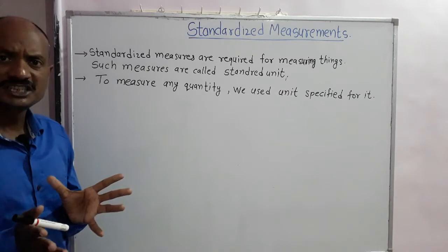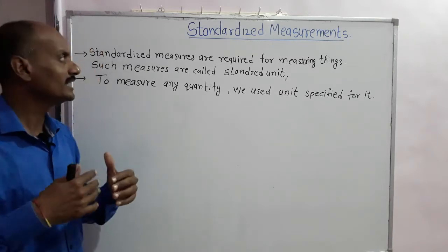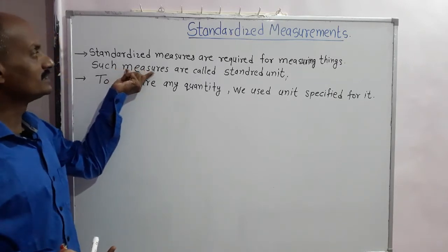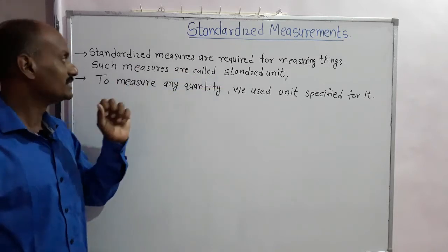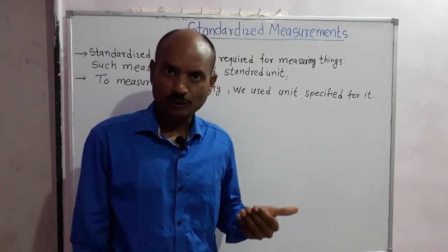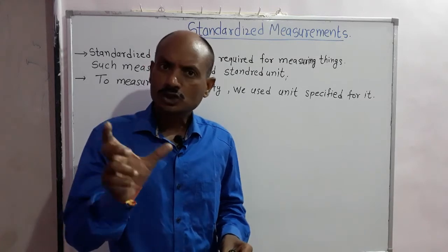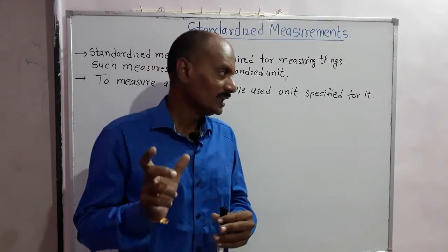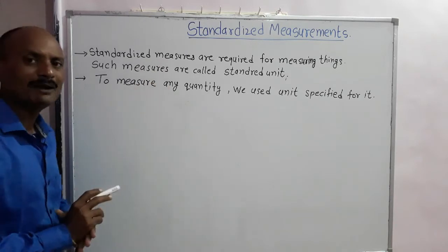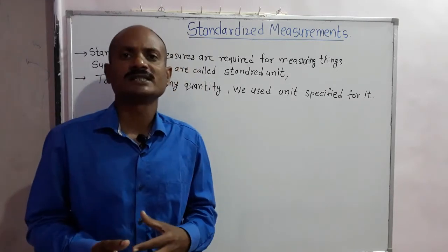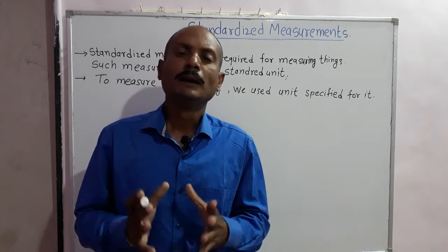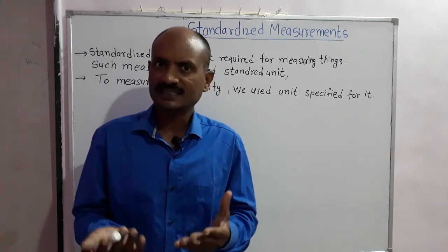We have to measure many physical quantities. To measure any quantity, we use units specified for it. For example, to measure length, meter is used as a unit — the unit for length is meter.